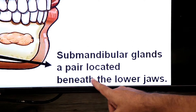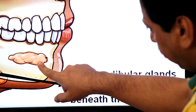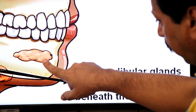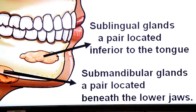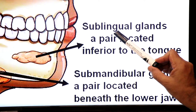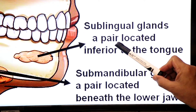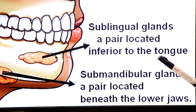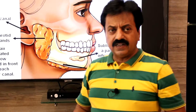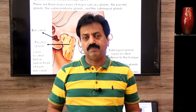The second pair is the submandibular glands, located beneath the lower jaw or mandible. The third pair of major salivary glands is the sublingual glands, located below the tongue — inferior to the tongue. So there are three pairs of major salivary glands: the parotid glands, the submandibular glands, and the sublingual glands.